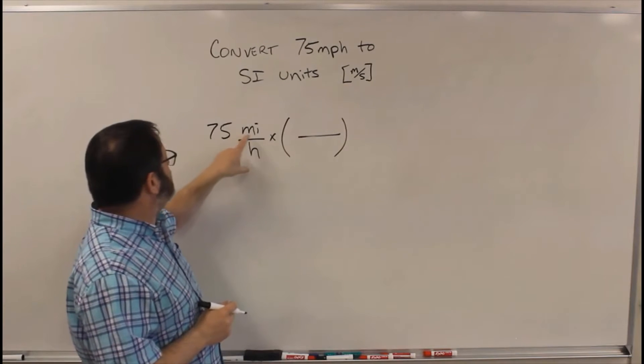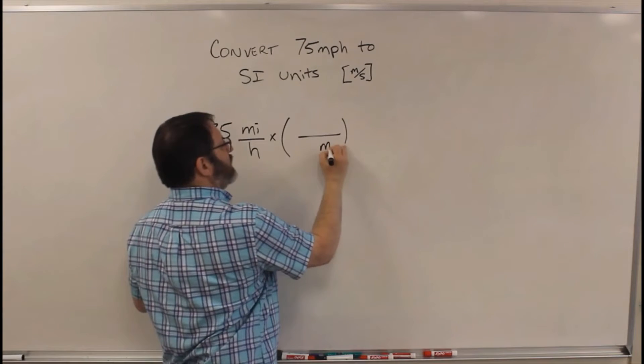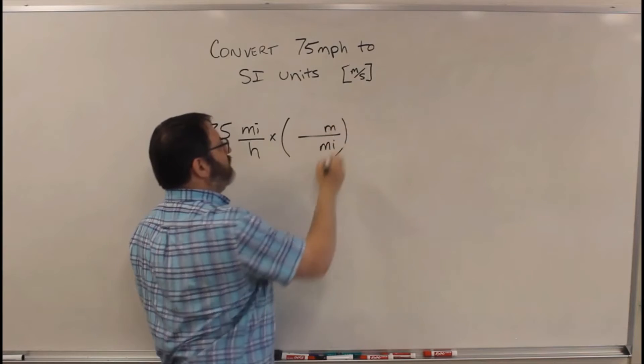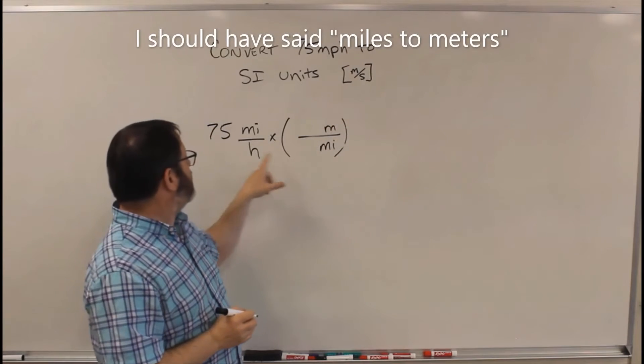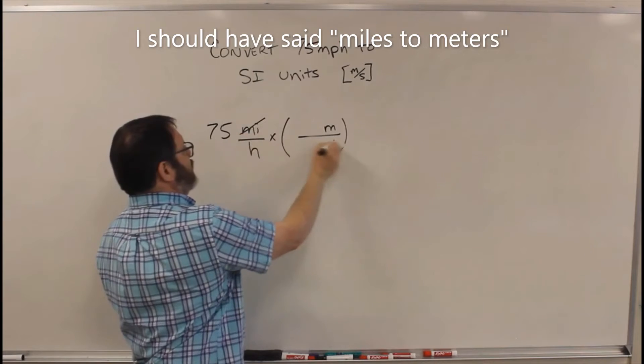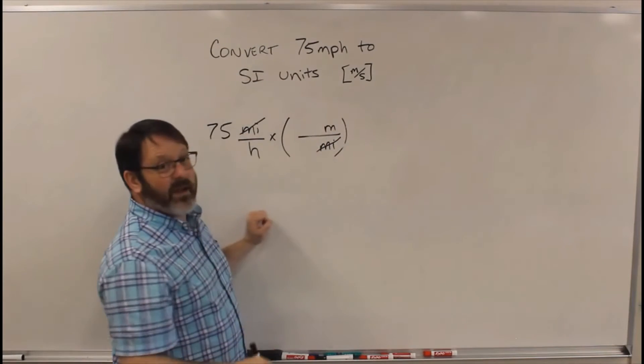So if I know I need to get rid of the miles, I'm going to put that on the bottom. If I can convert from meters to miles, that will get me to cancel those and I'll have meters. Then I'm halfway there.